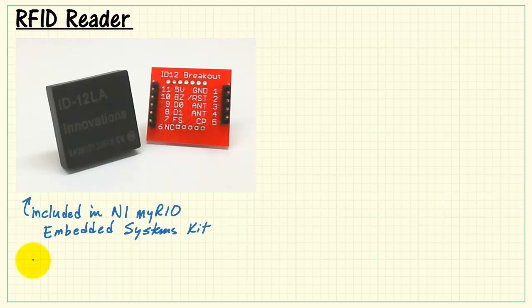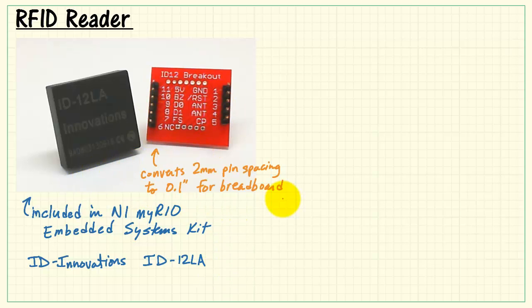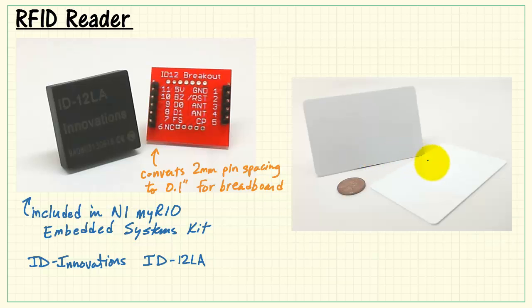This is the RFID reader that's included in the NI MyRio Embedded Systems Kit. It's by ID Innovations, called the ID12LA. This breakout board is required to convert the 2mm pin spacing of this reader to tenth inch format for breadboards.